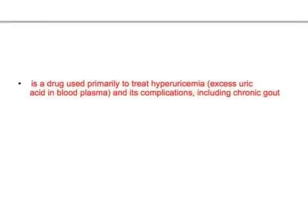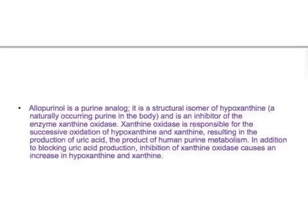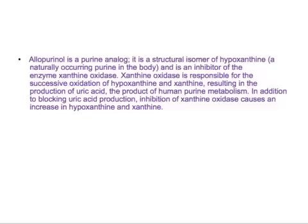Allopurinol is a drug used primarily to treat hyperuricemia — that is excess of uric acid in the blood plasma — and its complications including chronic gout. Allopurinol is a purine analog; it is a structural isomer of hypoxanthine, a naturally occurring purine in the body, and is an inhibitor of the enzyme xanthine oxidase.